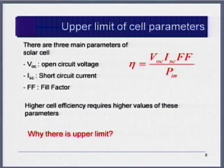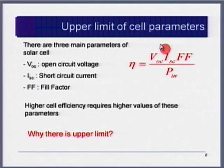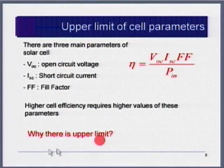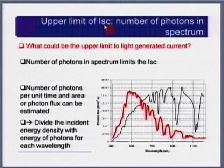Now let's look at the highest efficiency we can get. The efficiency of a solar cell is a function of VOC, ISC, and fill factor. Therefore, highest efficiency requires high VOC, high ISC, and high fill factor. The upper limit of ISC — the short circuit current — depends on how many photons are in the spectrum.